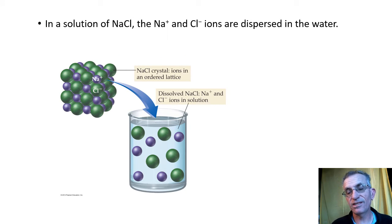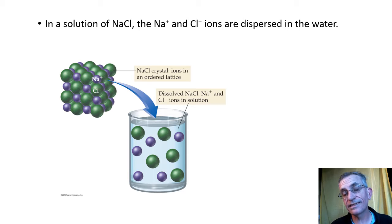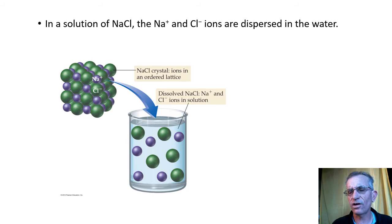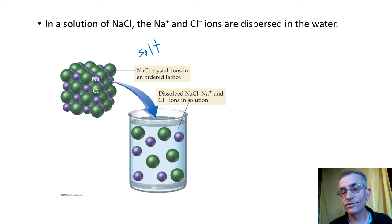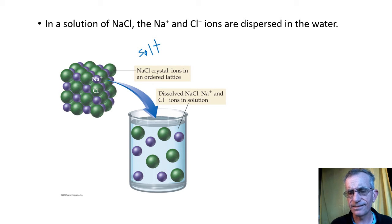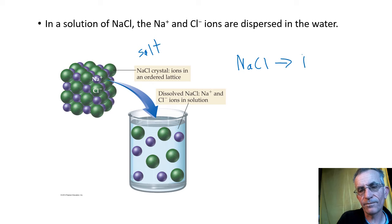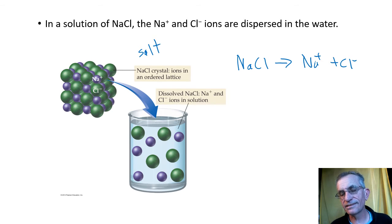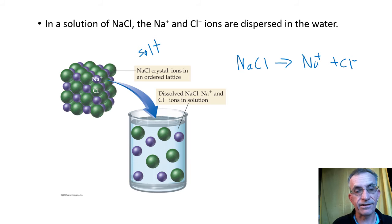The most common kind of solution we'll deal with is not two liquids or two solids, but something going into water — a solid being dissolved in water. Let's spend a couple more minutes on what exactly happens when you take a solid like salt and dissolve it in water. Salt is an ionic compound, and when it gets into water, it's going to separate — the sodium ions away from the chloride ions. Water breaks up the positive and negative charges.